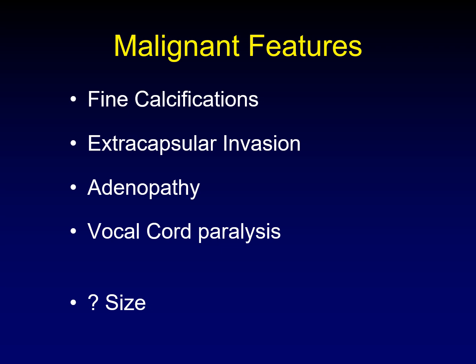What about size? If you have a huge thyroid mass, is that more likely to be malignant? In most situations, the larger the mass is, the more likely it is to be malignant. Is that true for thyroid masses? The answer is the opposite. Large size is actually protective because if it were malignant, it would have caused a substantial problem before it reached that size. So most of the massive thyroid goiters we see are benign.